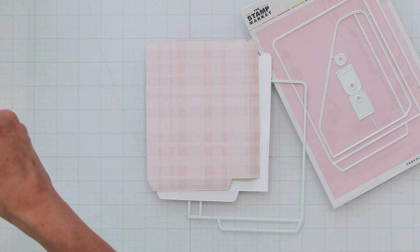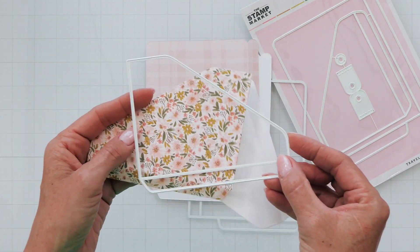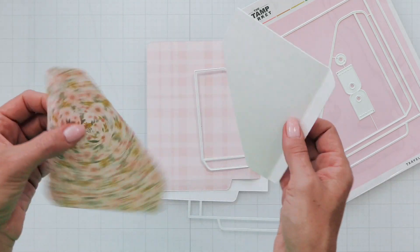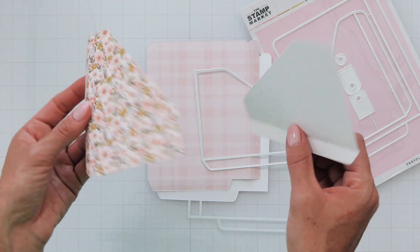Moving on, you'll also want to cut one of each of the inside pocket pieces with the pattern facing up for one and the pattern facing down for the other.